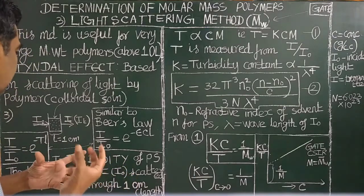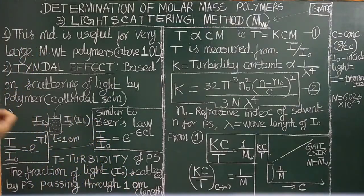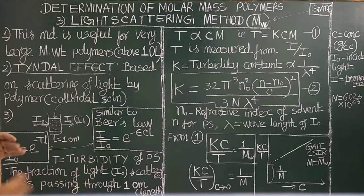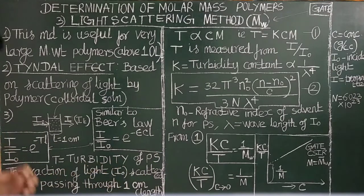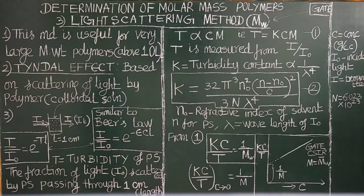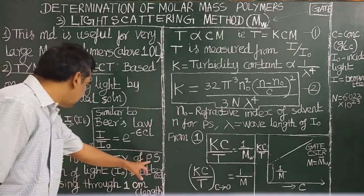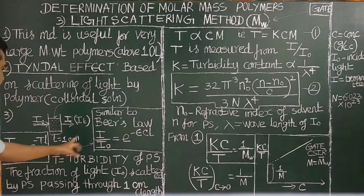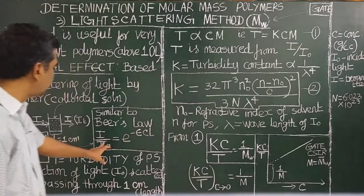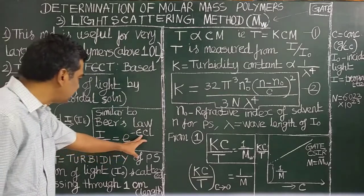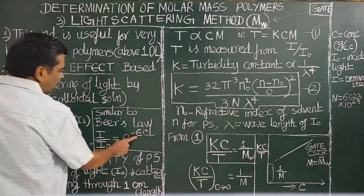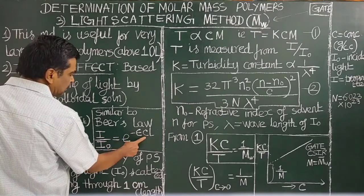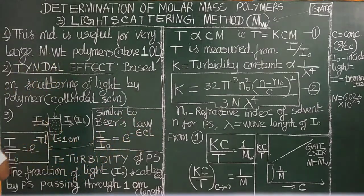Turbidity refers to the cloudiness of a solution. A clear solution allows light to pass through, whereas a colloidal solution causes scattering of light. T is the turbidity and L is the path length. This is similar to Beer's law: I/I₀ = e^(−εcl), where ε is the molar absorption coefficient, c is concentration, and l is path length.